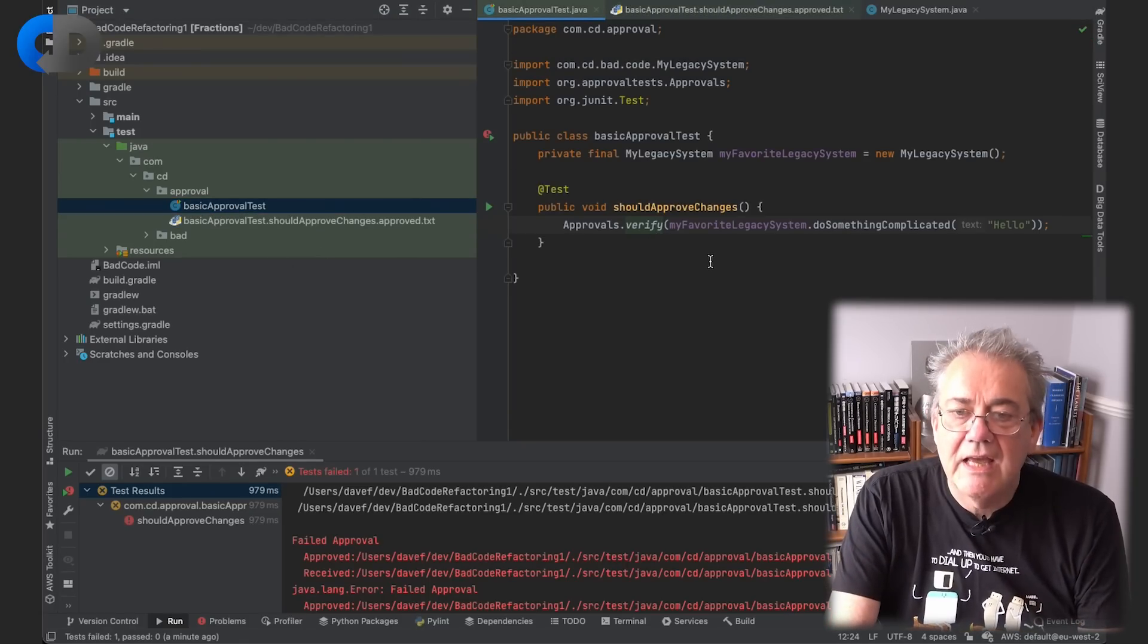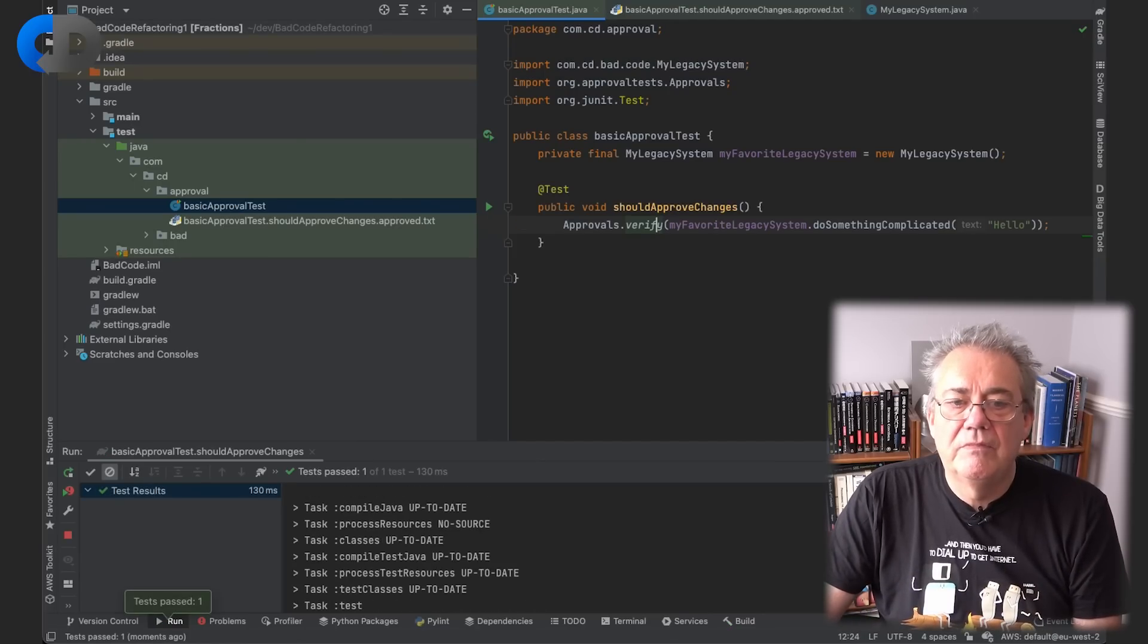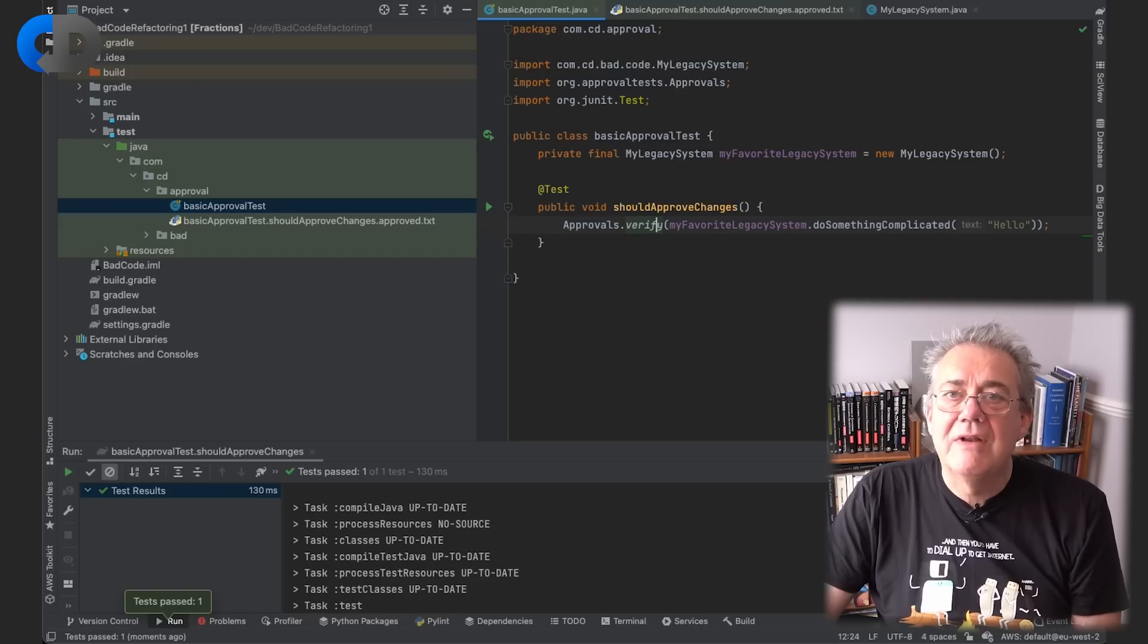So now what I can do is that I can rename this file so that that's approved. So now it's saying that what we're expecting as a result in this test, the approved result from this test, is to say hello world. So if I run this test again, I get a pass. So now I can refactor my code to my heart's content in full confidence that whatever changes I make, as long as they pass this test, my code's still doing what it meant to do.